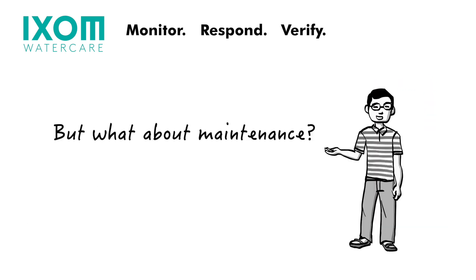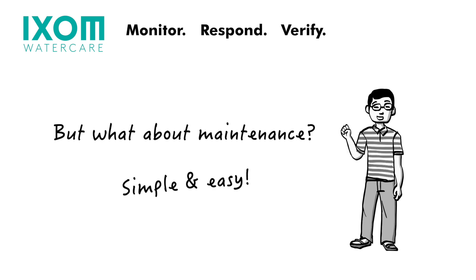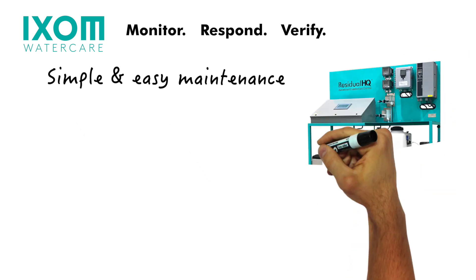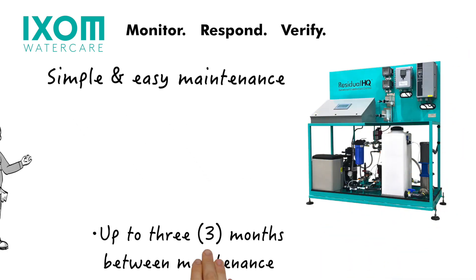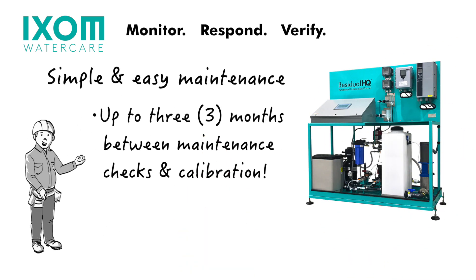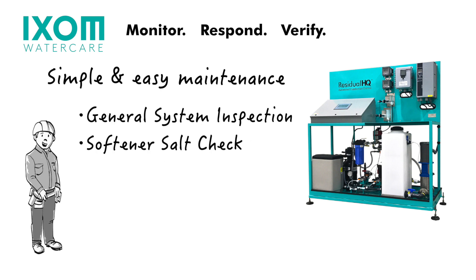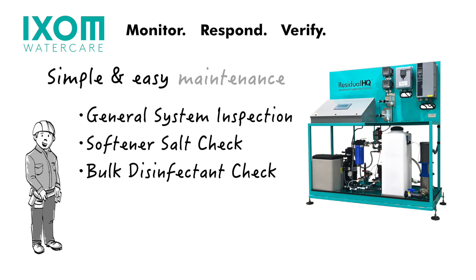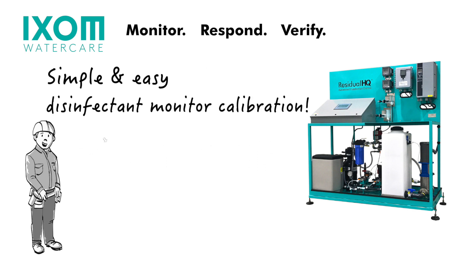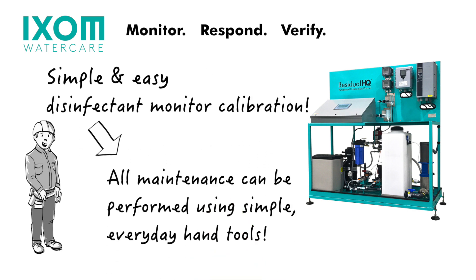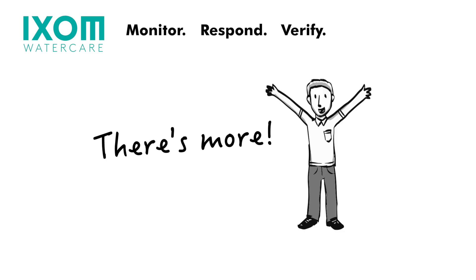But what about maintenance? Simple and easy. The Residual HQ can go up to three months between general maintenance checks and calibration. When the time comes, it's just a matter of a general system inspection and level checks for softener salt and disinfectant bulk tanks. Disinfectant monitor calibration is super quick, too, and any maintenance can be done with everyday hand tools if ever needed.